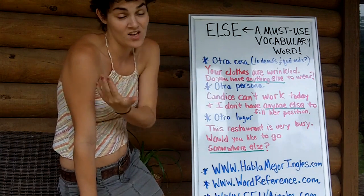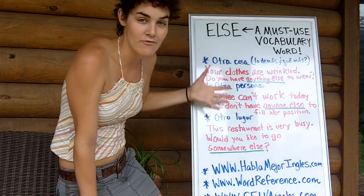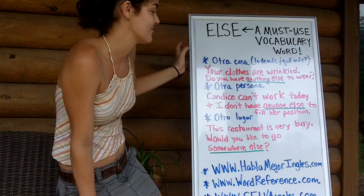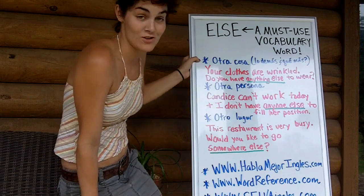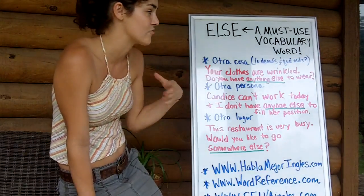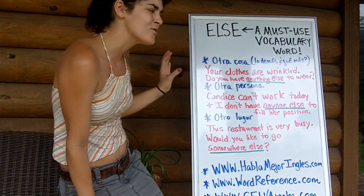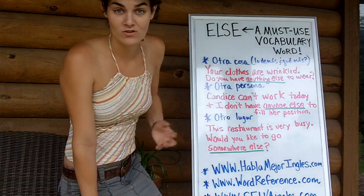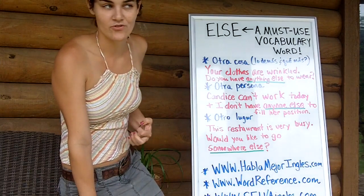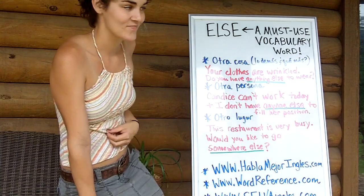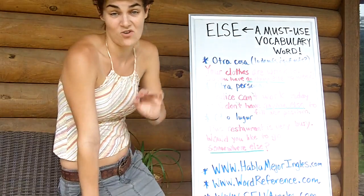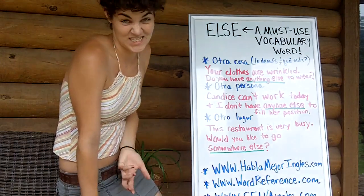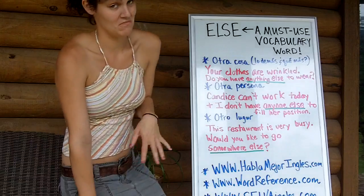Lo tienes que usar, porque esa es la forma natural de hablar inglés. Podemos usar ELSE para decir otra cosa — lo demás, o qué más. For example: 'Your clothes are wrinkled. Do you have anything else to wear?' Están arrugadas, your clothes. Do you have anything else? Tienes otra cosa para ponerte? Maybe you do, maybe you don't.